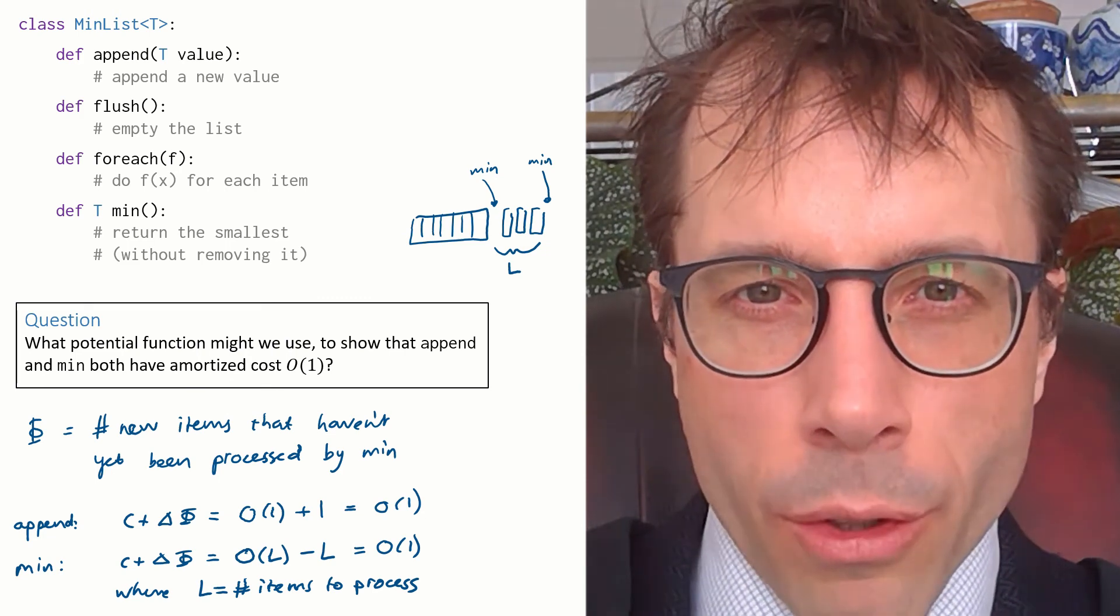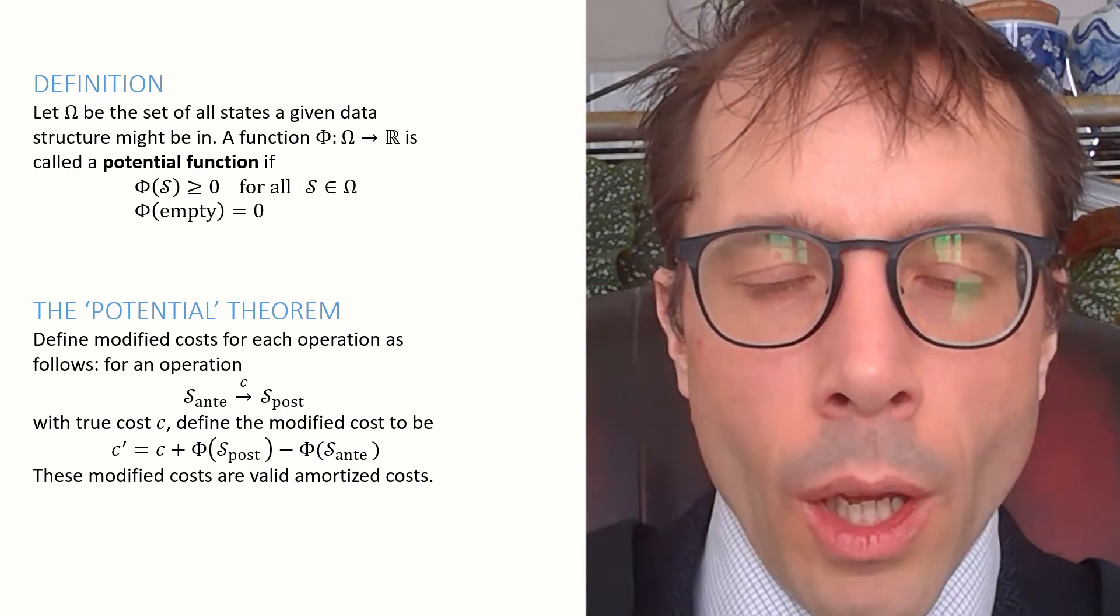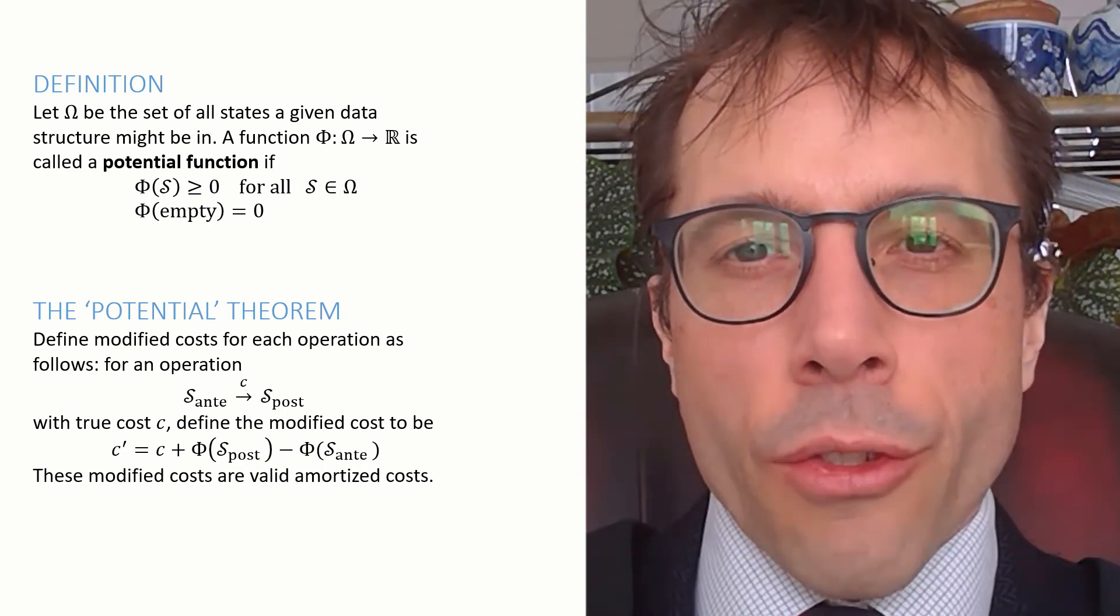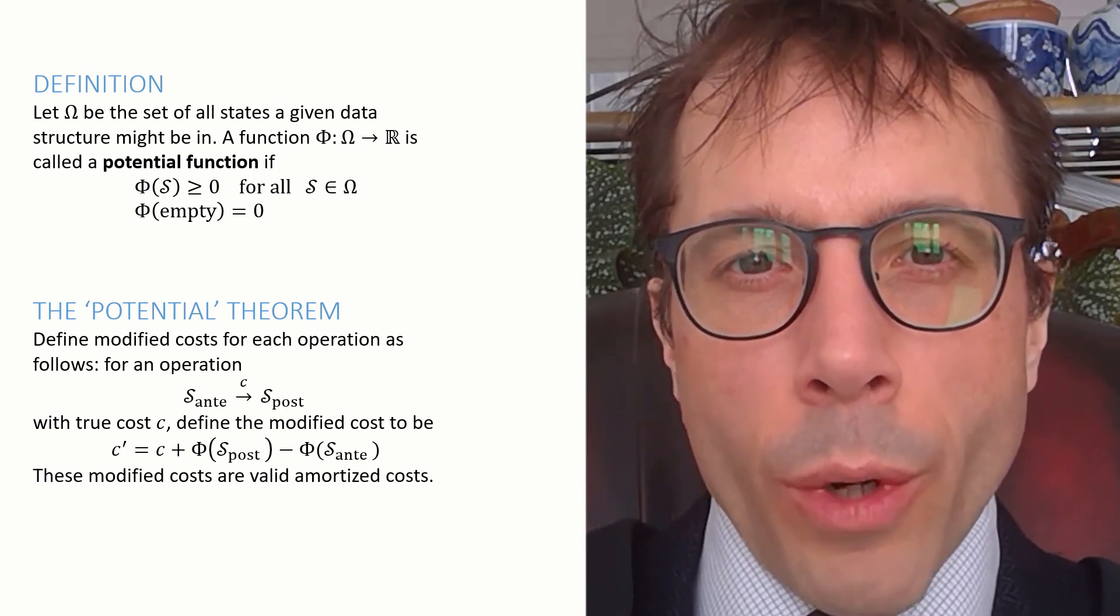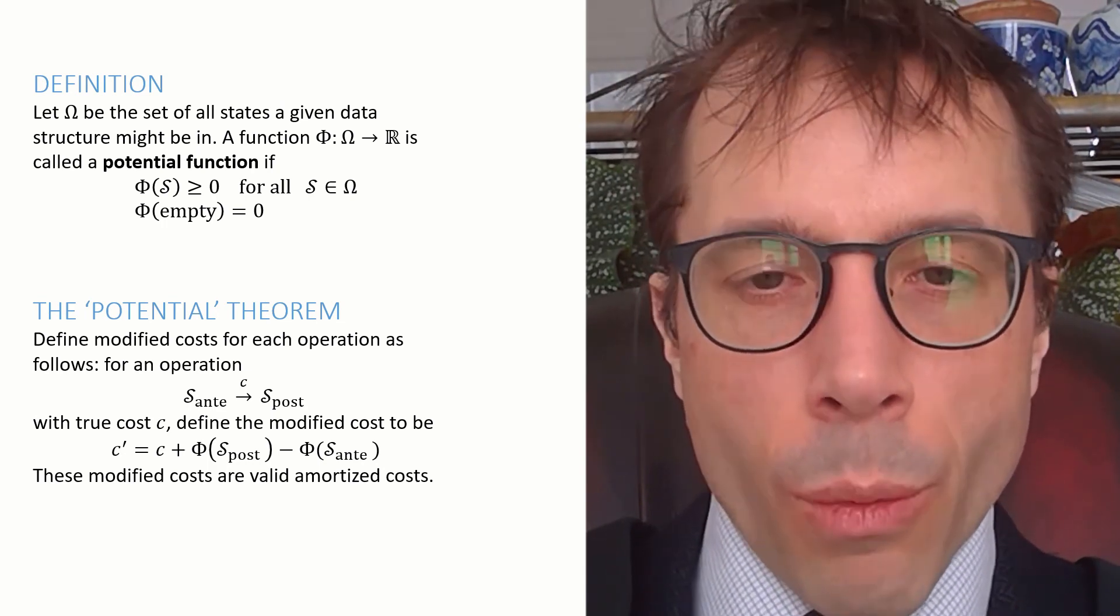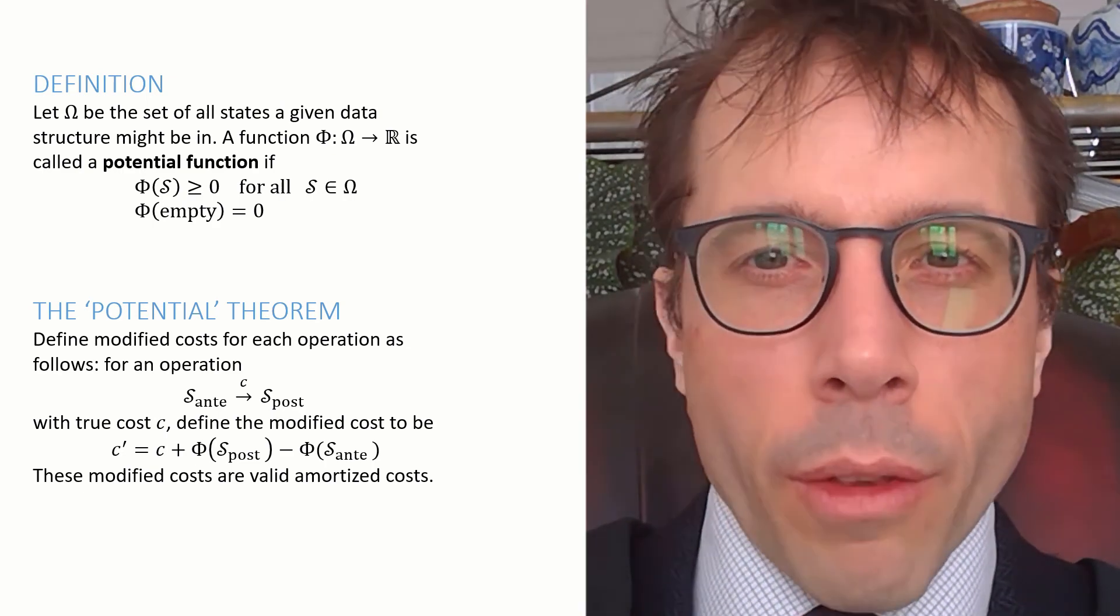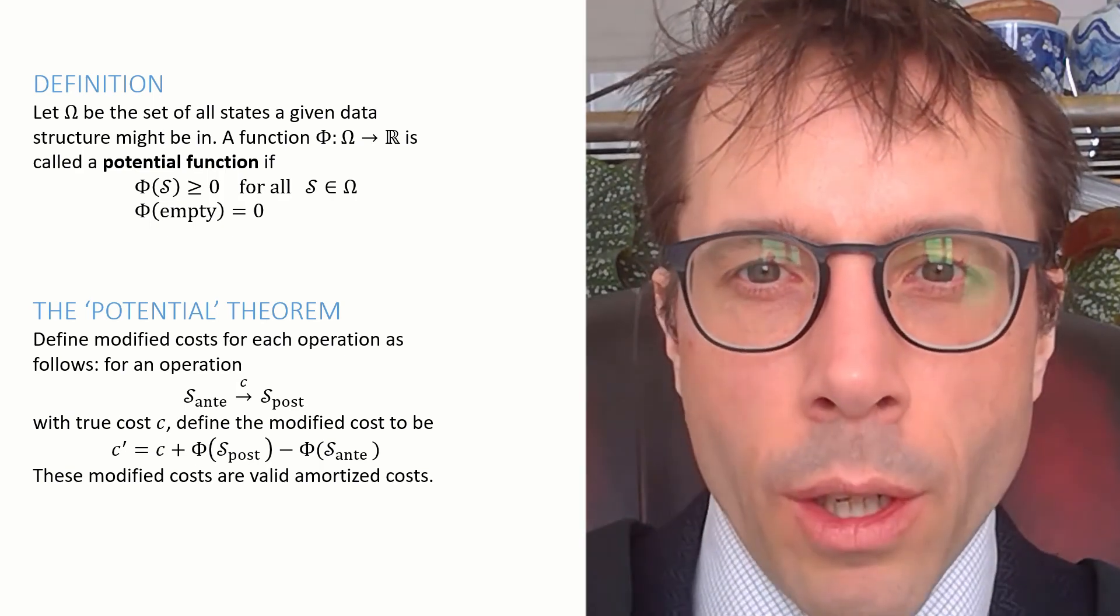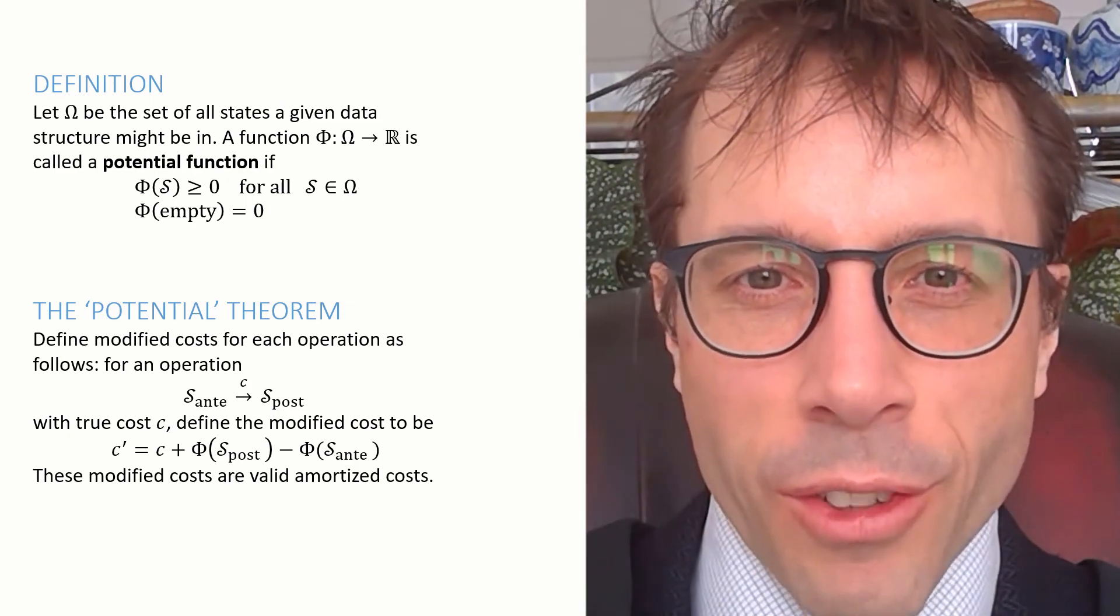But before going on to that, I just want to wrap up with a remark about potential functions. We started this video with a theorem, the potential theorem, that says if we define modified costs using a potential function, then we end up with valid amortized costs. I don't want to go through the proof in this video. It's an easy proof, but it's based on algebra rather than on big ideas, so there's nothing to be gained by talking through it. Instead, please go to the printed notes and read it and copy it out and remember it. It is examinable.